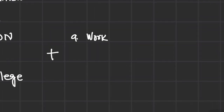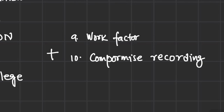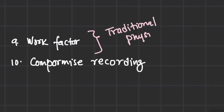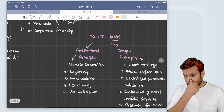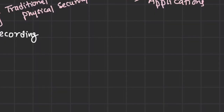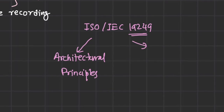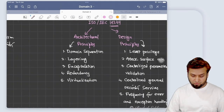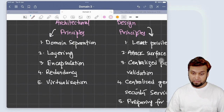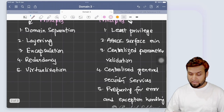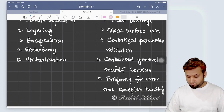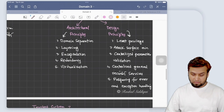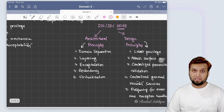Two additional principles were added later, borrowed from physical security: work factor and compromise recording — these are principles nine and ten. For ISO/IEC 19249, they differentiate between architectural principles and design principles. The five architectural principles are: domain separation, layering, encapsulation, redundancy, and virtualization. The design principles are: least privilege, attack surface minimization, centralized parameter validation, centralized general security services, and preparing for error and exception handling.